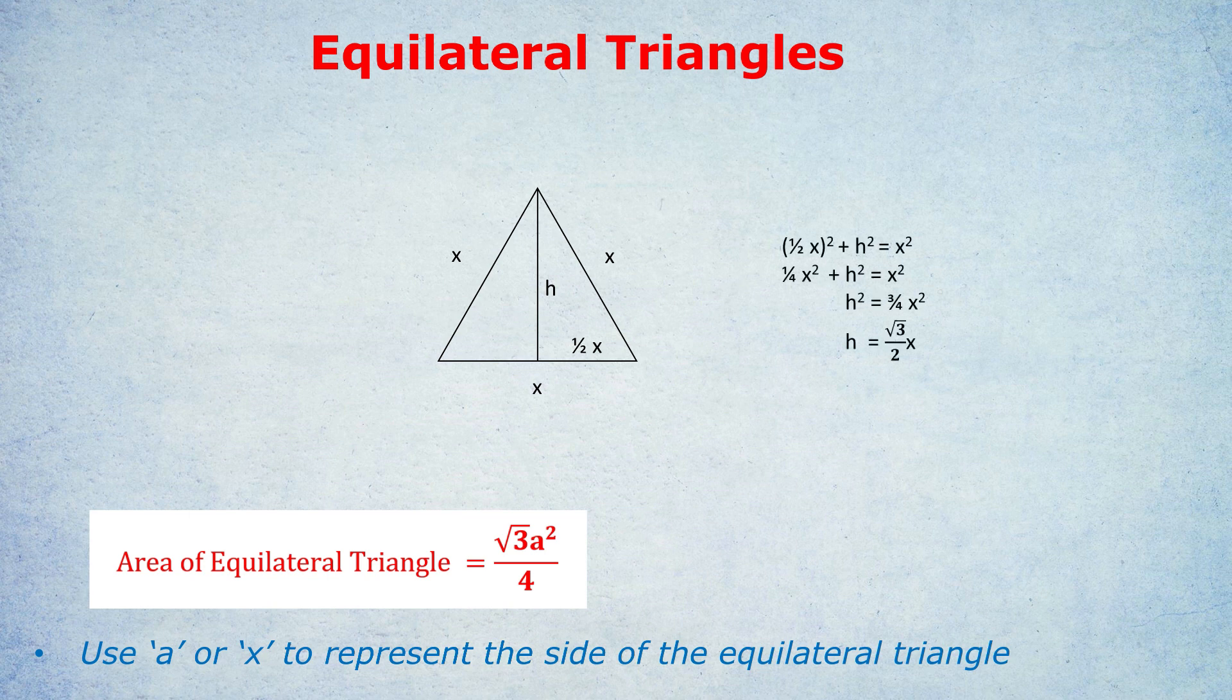And I've just solved that for you on the right. A half x squared is a quarter x squared, and then take away a quarter x squared from both sides. You're left with h² = ¾x², because x² take away a quarter x² is three quarters x².